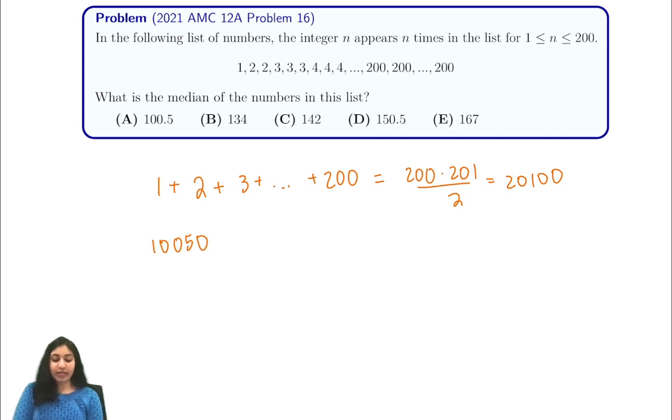So if we look at option choice A, we have 100.5. And 100 times 101 over 2 is 50 times 101, which is much smaller than our desired number.